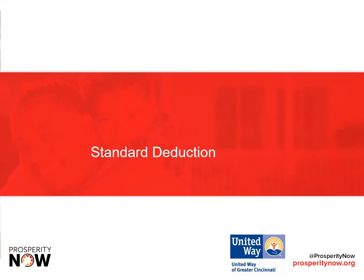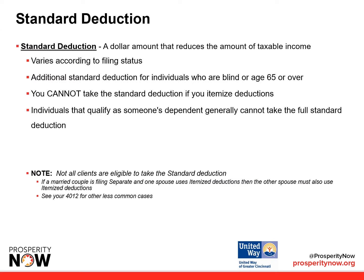Let's talk a little bit more about the standard deduction. The standard deduction is a dollar amount that reduces the amount of taxable income. It varies according to filing status. There is an additional standard deduction for individuals who are blind or over age 65. You cannot take the standard deduction if you itemize deductions. Individuals that qualify as someone's dependent generally cannot take the full standard deduction. Not all clients are eligible to take the standard deduction. If a couple is married filing separately and one spouse uses itemized deductions, then the other spouse must also use itemized deductions.